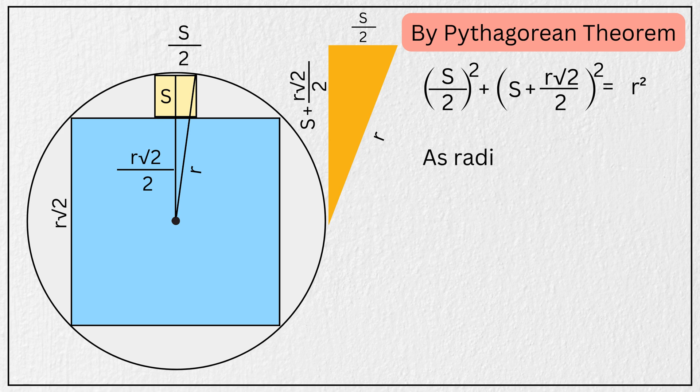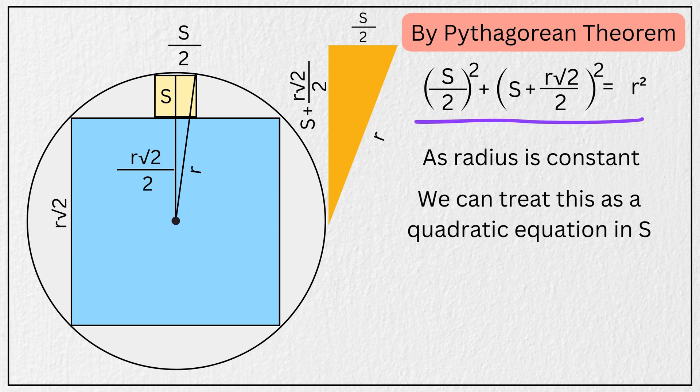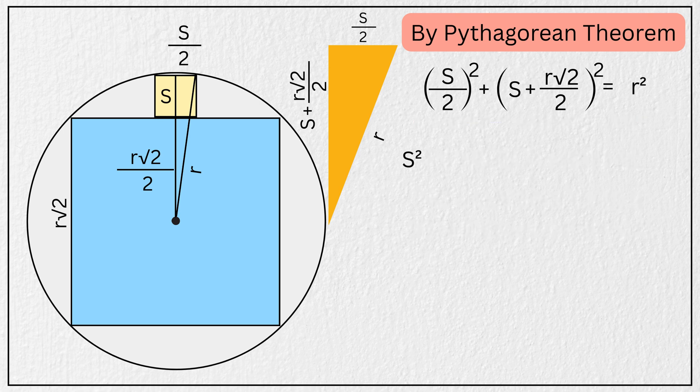Since the radius is just a constant, we can treat this as a quadratic equation in s. So simplifying this in terms of s squared, we get s squared multiplied by five over four, plus s multiplied by r times the square root of two, minus r squared divided by two, equals zero. Now multiplying by four to eliminate the fraction, we get five times s squared, plus s multiplied by four times r times the square root of two, minus two times r squared, equals zero.